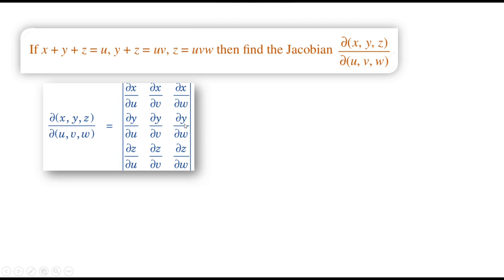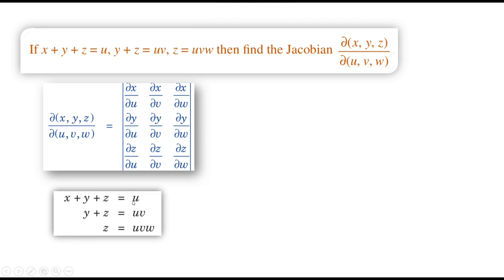We are given that u equals x plus y plus z, uv equals y plus z, and uvw equals z. Our task is to express x, y, and z in terms of u, v, and w. Then we need to find the partial derivatives and calculate the Jacobian.